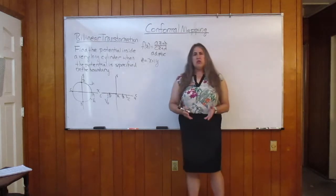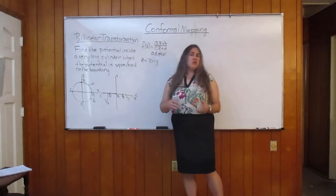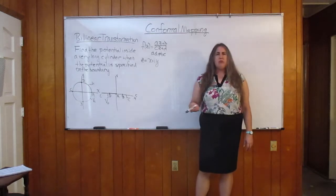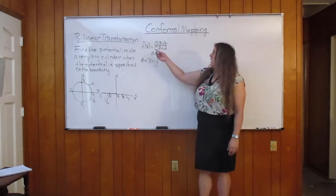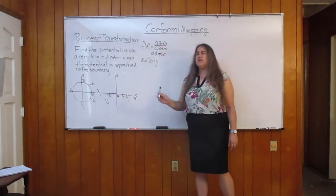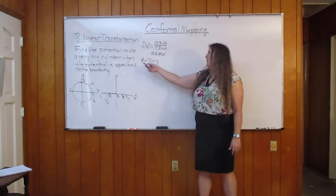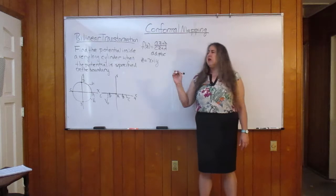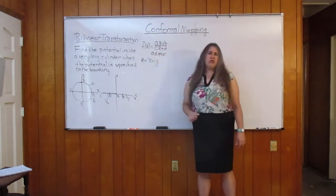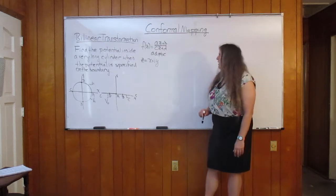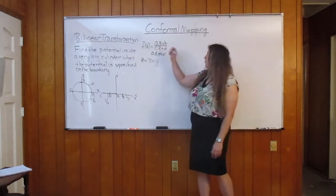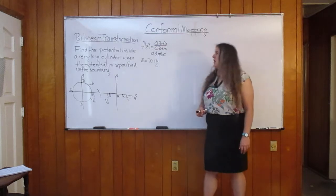We were concerned with circles and lines. Circles and lines under bilinear transformations map to lines and circles. The bilinear transformation is given by (az + b) over (cz + d). Z is a complex variable, x + iy, and there's a restriction that ad is not equal to bc, so that the transformation function won't be a constant.